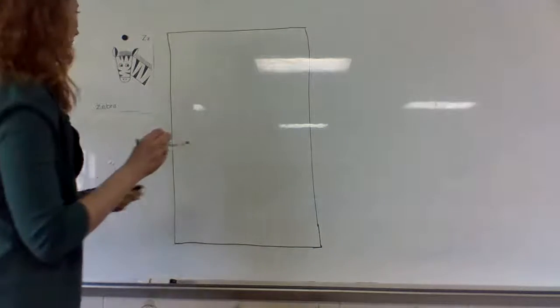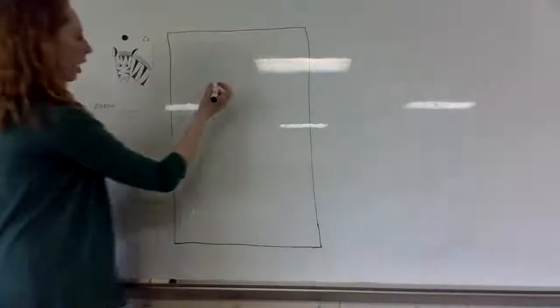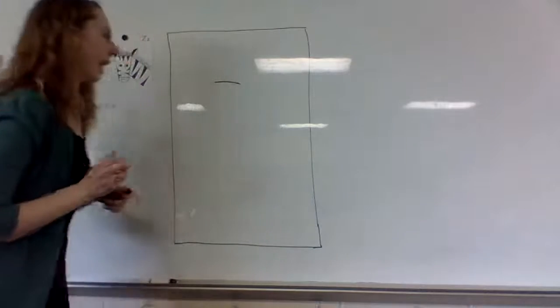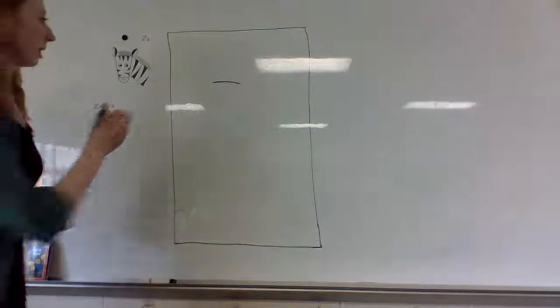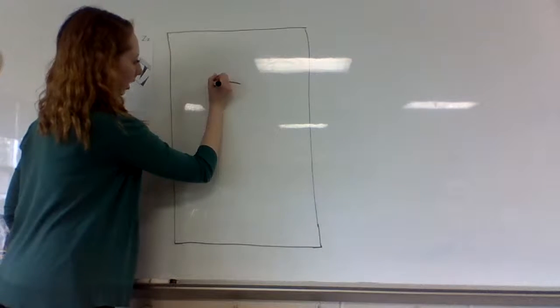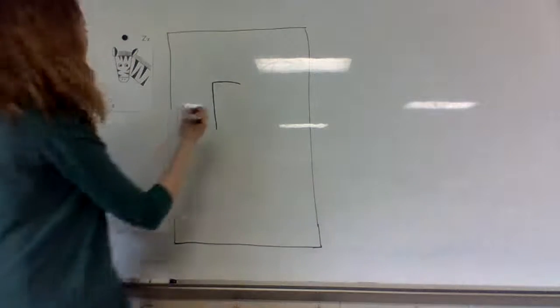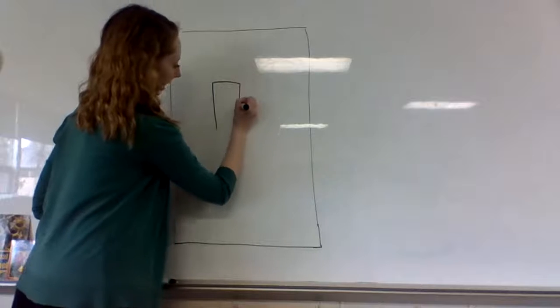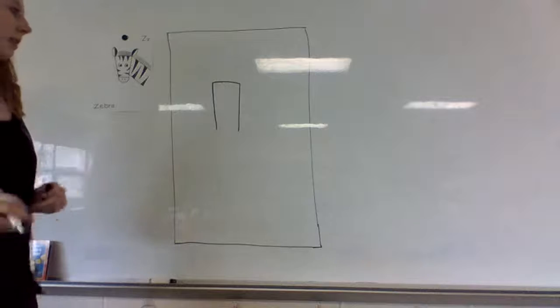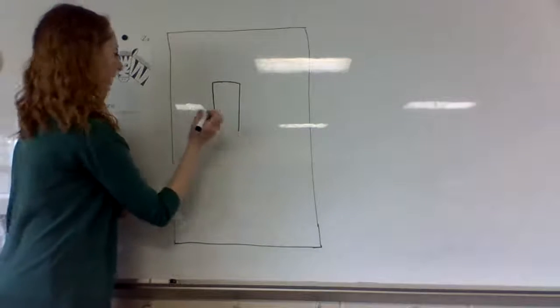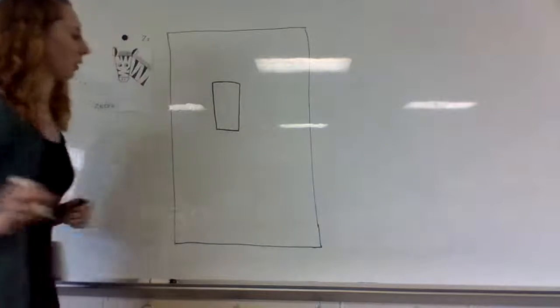The first thing we're going to do is in the middle of our page, we're going to draw the top of the zebra's head. So we're just going to draw a straight line. Don't make it too long because this is a head and we need room for everything else. Now we're going to draw a line down on the left side, nice and straight, and a line down on the right side, also nice and straight. They should be the same length and end at the same place. Now you're gonna draw a straight line connecting those two. So you should have a rectangle on your paper.